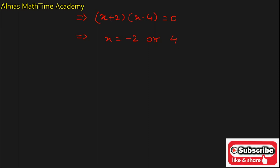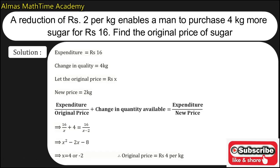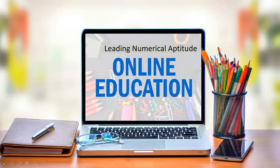Now the values of x: x will become x is equal to minus 2 or x is equal to plus 4. Now since the value of x is the original price and the price value cannot be negative, therefore we have to consider the original price is equal to plus 4. Therefore the original price of the sugar is equal to rupees 4.